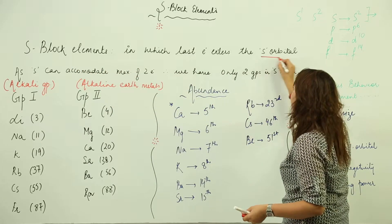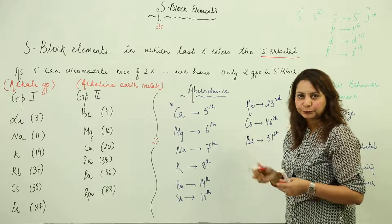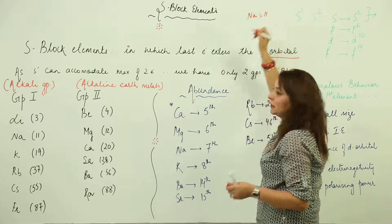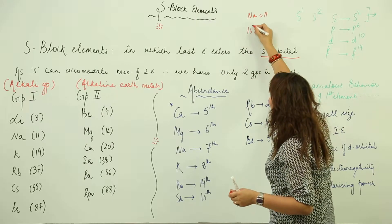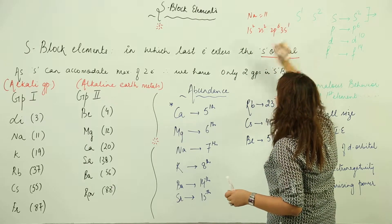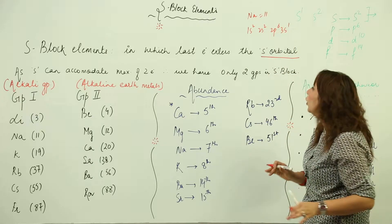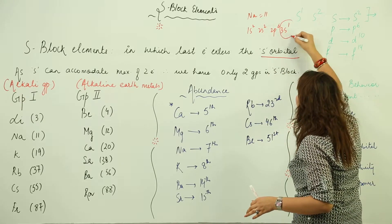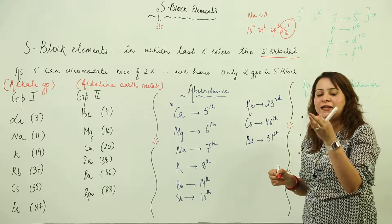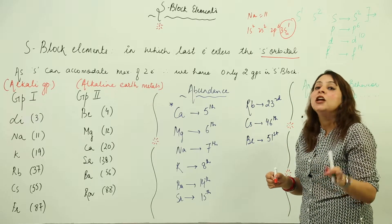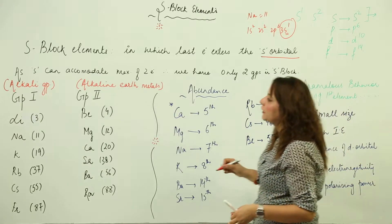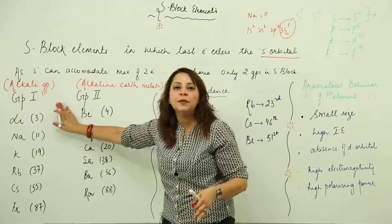S-block elements are those in which the last electron enters the s orbital. For example, sodium has atomic number 11 and its configuration is 1s² 2s² 2p⁶ 3s¹. As you can see, the last electron enters the s orbital — whether it is the first, second, or third principal shell does not matter. If the last electron enters the s orbital, that element is a member of the s block.